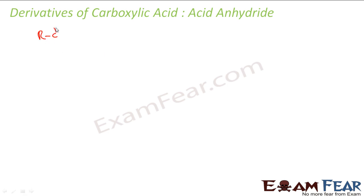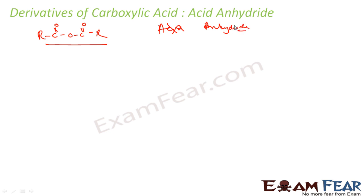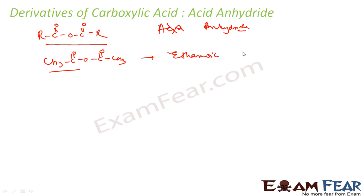Next is acid anhydride. This is the condensation product of carboxylic acid — two acid units joined with loss of water. To name it, you simply replace the word 'acid' with 'anhydride'. For example, CH3CO-O-COCH3: since it comes from ethanoic acid, the IUPAC name is ethanoic anhydride. The common name, since it comes from acetic acid, is acetic anhydride.